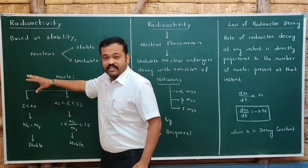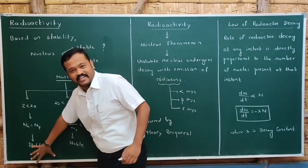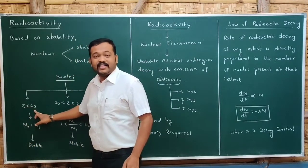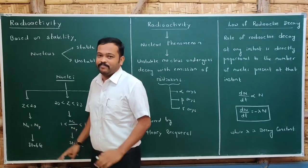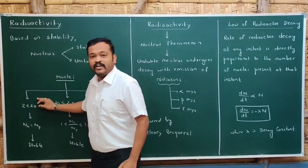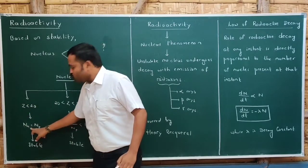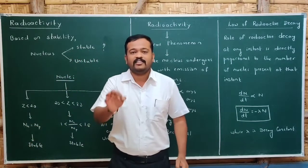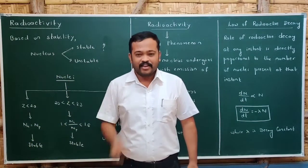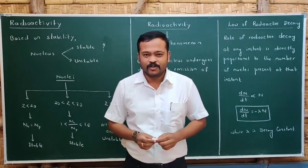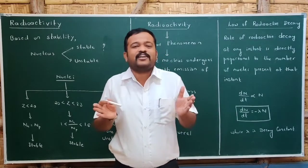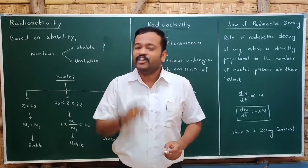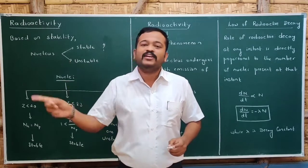In the first category, if the atomic number is less than 20 and the number of protons equals the number of neutrons, then the nucleus is stable; otherwise it is unstable. Inside the nucleus there are two forces — electrostatic force and nuclear force — and they must balance each other to make the nucleus stable.